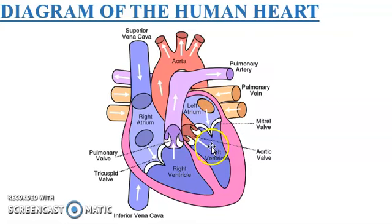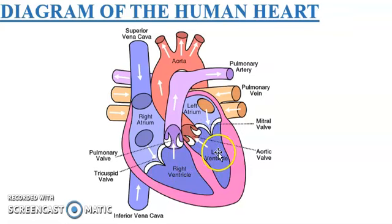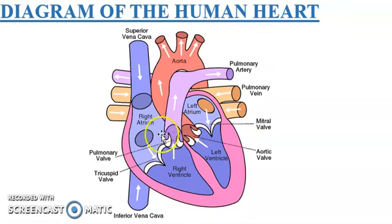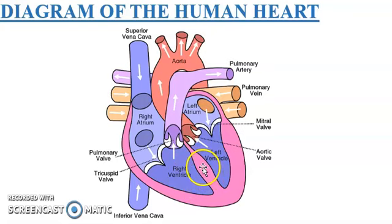Below the atria we have the lower chambers, which are the ventricles. They are referred to as the lower chambers, or the 'downstairs' of the heart. The walls of the ventricles are much thicker and more muscular than the walls of the atrium, because the ventricles pump blood at a greater pressure and send blood out of the heart to other parts of the body.